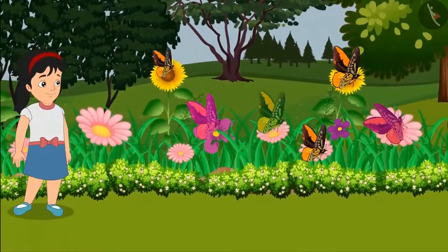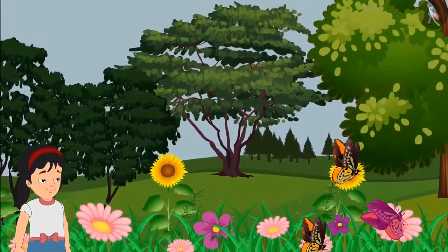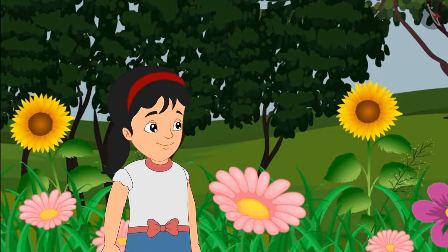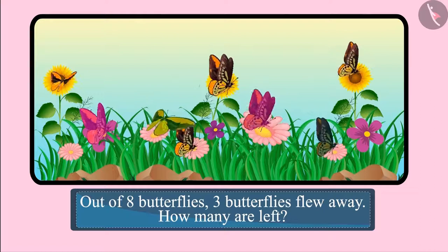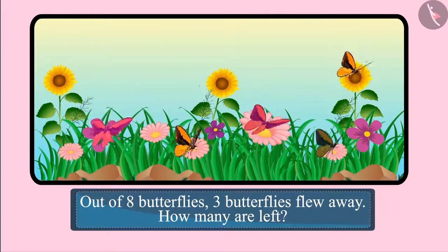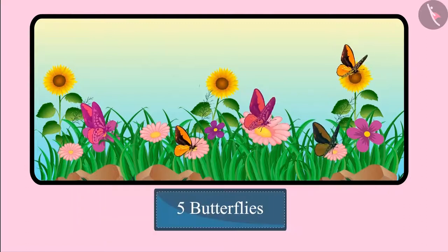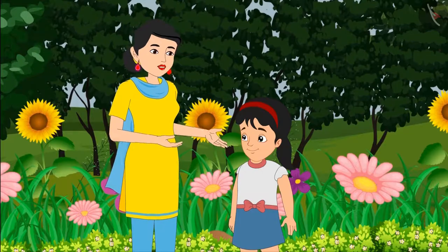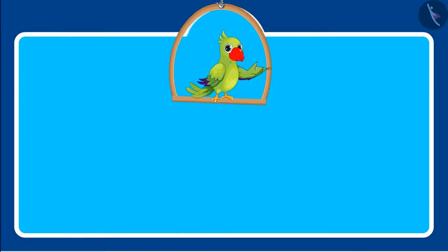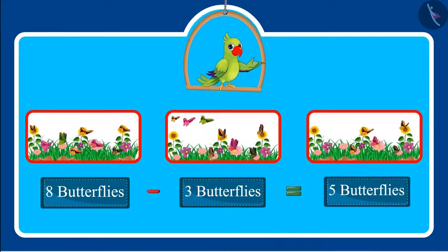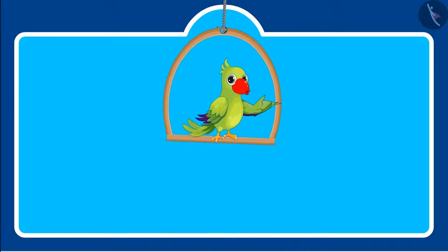Pinky goes a little closer to the flowers to see the butterflies more closely, and three butterflies fly away. Oh, three butterflies flew away! Out of eight butterflies, three butterflies flew away, so how many butterflies are left on the flower? Five butterflies are left, mommy! Very good, Pinky, you are absolutely right!